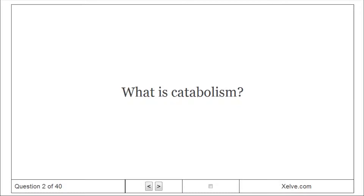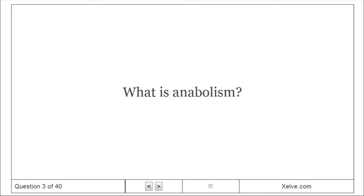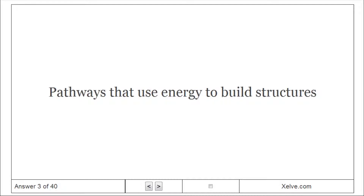What is catabolism? Energy-producing pathways. What is anabolism? Pathways that use energy to build structures.